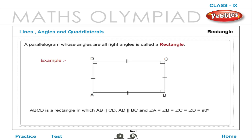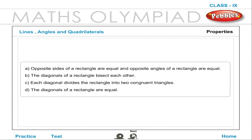Rectangle: A parallelogram whose angles are all right angles is called a rectangle. ABCD is a rectangle in which AB is parallel to CD, AD is parallel to BC, and angle A = angle B = angle C = angle D = 90 degrees. Properties: Opposite sides of a rectangle are equal; opposite angles are equal; the diagonals bisect each other; each diagonal divides the rectangle into two congruent triangles; and the diagonals of a rectangle are equal.